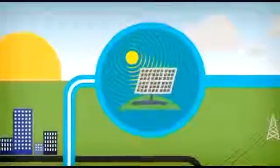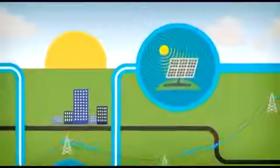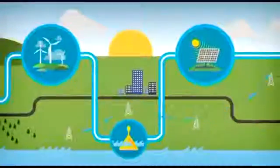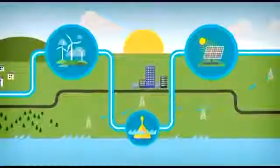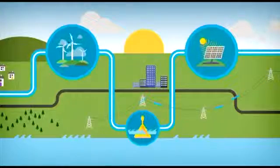National Grid can take the electricity generated from any of these sources, putting it into the network that eventually delivers electricity to homes and high streets around the country.